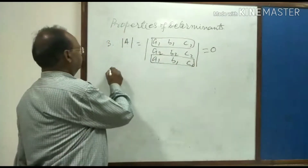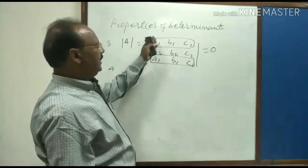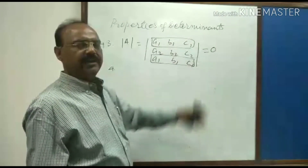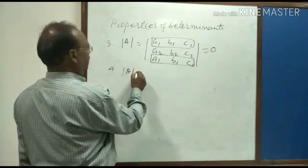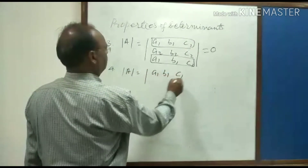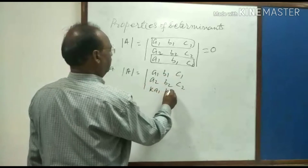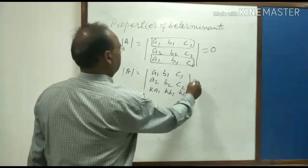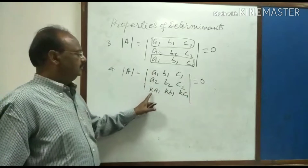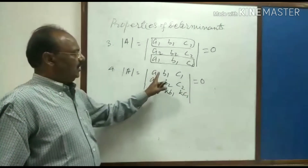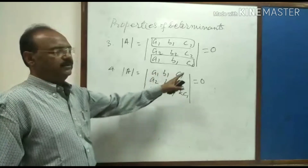Next property: if rows are not exactly identical but their elements are proportional, then the value of the determinant will again be zero. For example, suppose determinant A has elements a1 b1 c1, a2 b2 c2, k times a1, k times b1, k times c1. Then the value of this determinant will be zero, because the elements of the third row and first row are proportional — the third row is k times the elements of the first row.